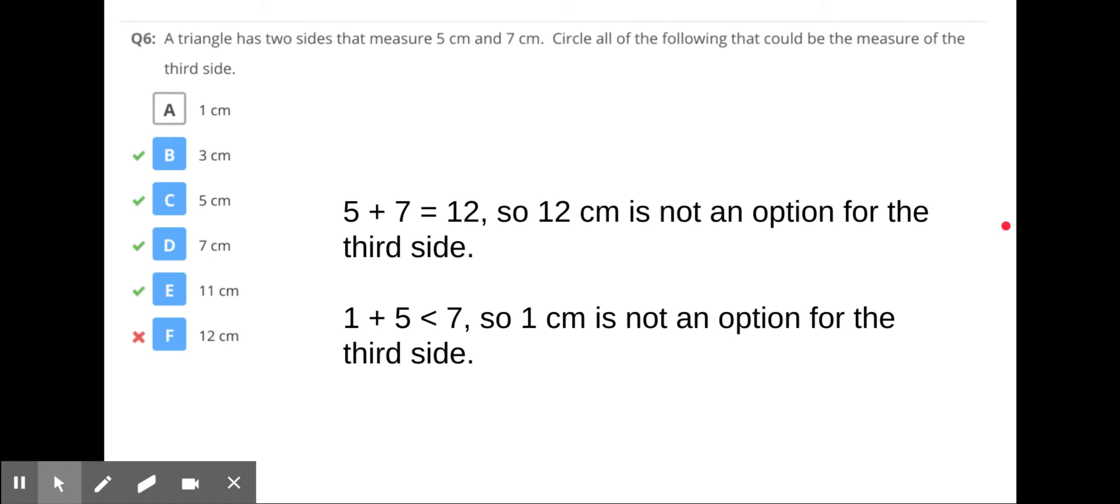Going to the next one, number 6. The triangle has two sides that measure 5 centimeters and 7 centimeters. Circle all the following that could be the measure of the third side. Only 3, 5, 7, and 11 will work. The other two sides don't work. 5 plus 7 is 12, so it could be forming up on that third side. 1 plus 5 is 6, that's less than 7, so we're not gonna be able to have that option. So A and F would not work.